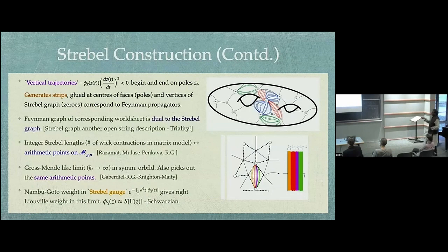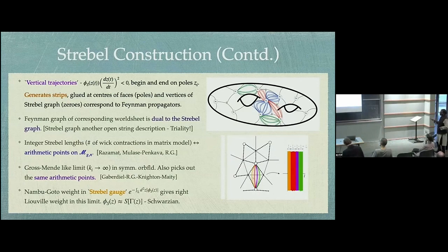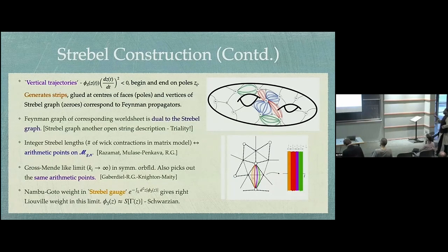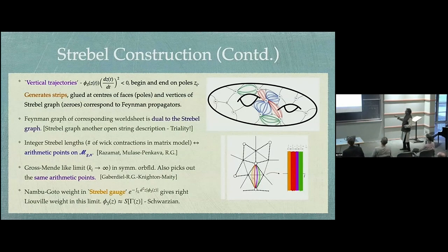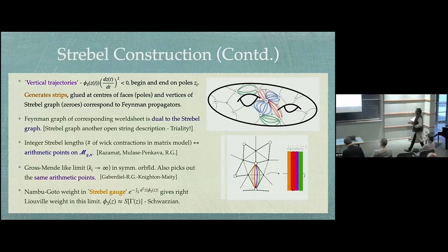When the Strebel lengths are integers — essentially the number of Wick contractions — those correspond to arithmetic points on the Riemann surface. The dual graph of the critical graph turns out to be the Feynman graph, which you can build out of gluing vertical trajectories that are transverse to the horizontal trajectories, generating the Feynman diagram strips. In the Gross-Mende-like limit of the symmetric orbifold, you pick out the same arithmetic points, and in that particular case there's a non-trivial weight given by the Liouville factor that the Lunin-Mathur computation gives.